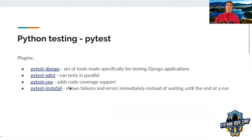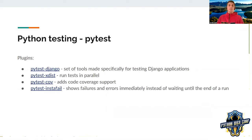PyTest has a bunch of really well-done and mature plugins. To name just a few: pytest-django is a set of tools made specifically for testing Django applications; pytest-xdist is used for running tests in parallel; pytest-cov adds coverage support to your project; and pytest-instafail is used to show failures right away instead of waiting until the end of the test suite.